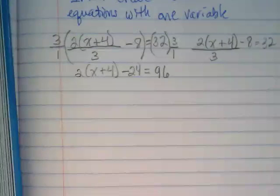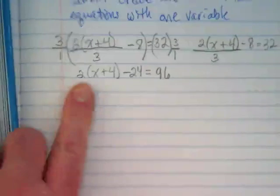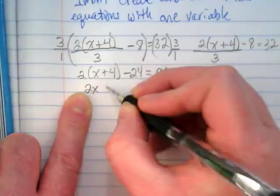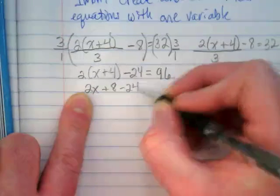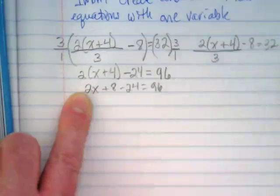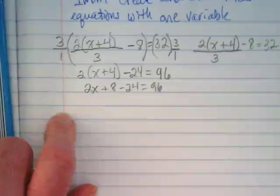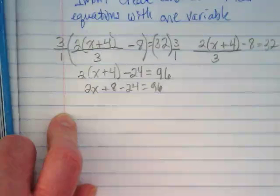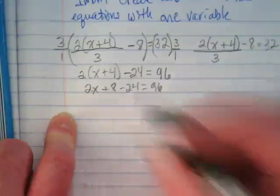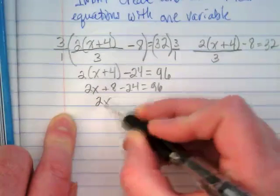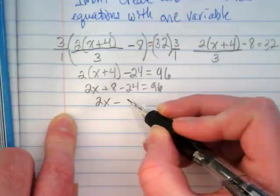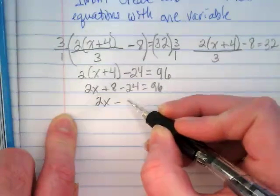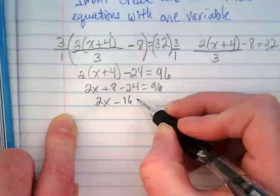Next step, distributive property. So we're going to get 2x plus 8 minus 24 is equal to 96. After distributive, we look for combining. So we get 2x minus, oh, what is 8 minus 24? It's going to be 16. Negative 16 is equal to 96.